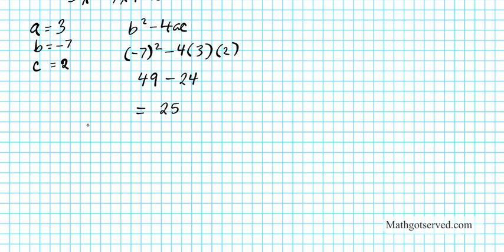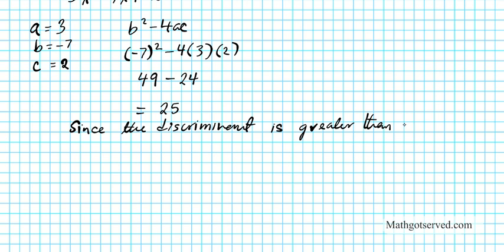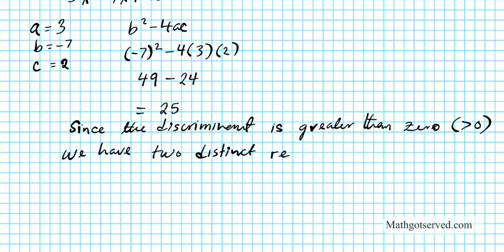Note that 25 is a perfect square. Since the discriminant is greater than 0 and is a perfect square, we have two distinct real roots that are rational. We're sure that they're rational because a, b, and c are all integers, and our discriminant is a perfect square which has a square root that gives us an integer. So when we combine integers together, we're always guaranteed to get a rational number.